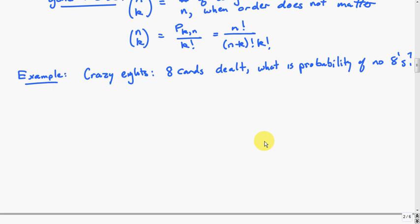Let's look at a slightly more complicated example. Suppose you're playing Crazy 8's in which 8 cards are dealt. We're interested in calculating the probability that an 8 card hand has no 8's. We want to figure out the number of outcomes in the event A over the number of possible outcomes.